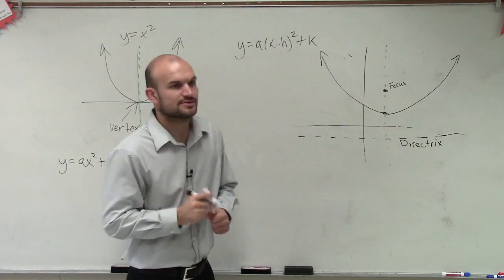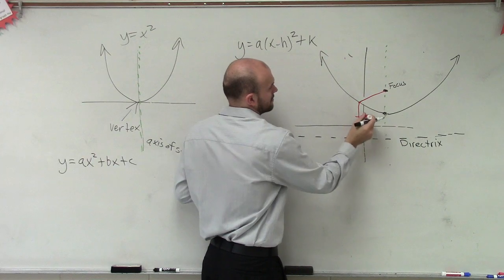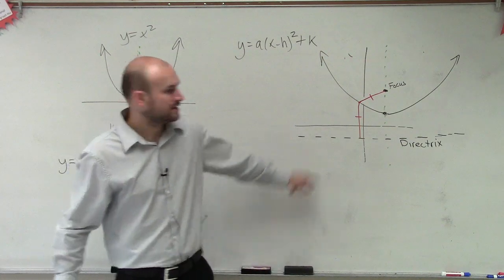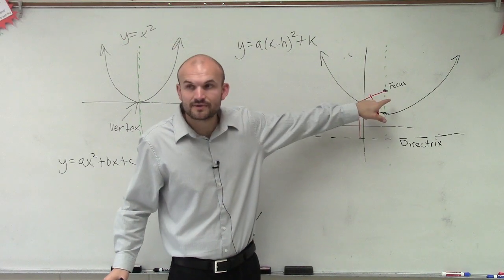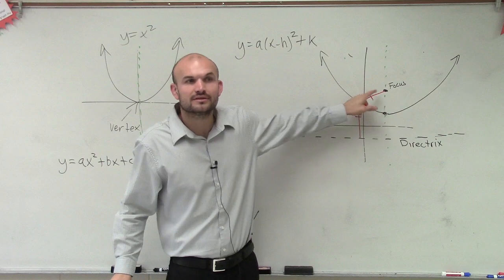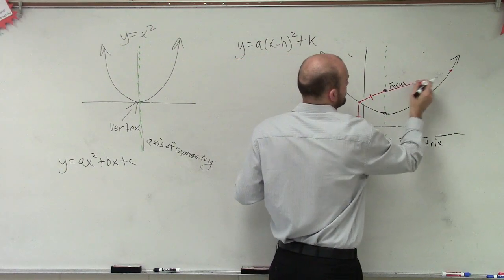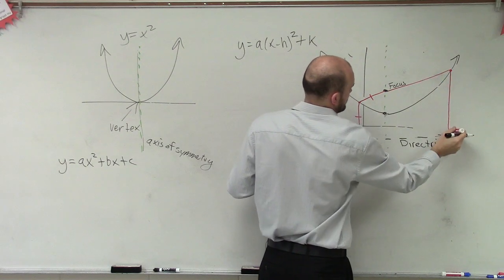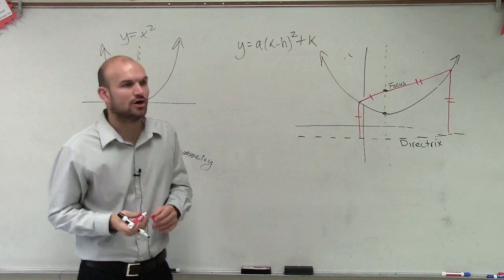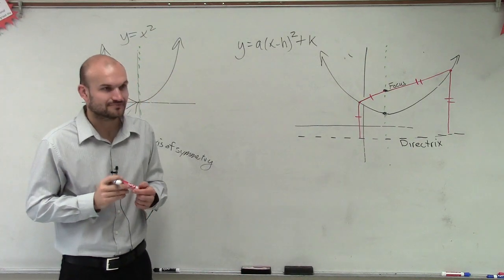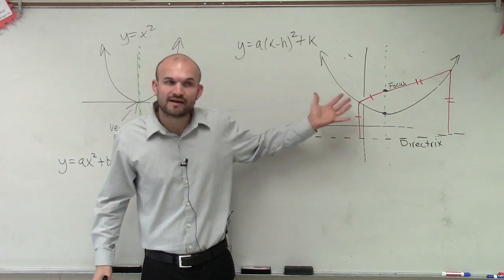So if we take a point on a parabola, the distance from that point on the parabola to the focus is going to be exactly the same. It doesn't matter where that point is. I'm not the best drawer in the world, but it's all supposed to be the same. So that is going to be your basic definition of a parabola,